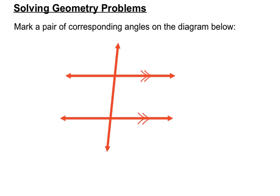Now we're asked to mark a pair of corresponding angles on the diagram. Another name for corresponding is matching — they've got to be in matching positions. There are two intersections, a top intersection and a bottom intersection, and we need pairs of angles in matching positions. For example, top left in the top intersection and top left in the bottom intersection. Other alternatives would be bottom left, top right, or bottom right in each intersection.